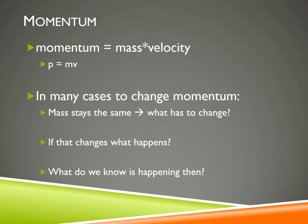The way we calculate momentum is mass times velocity: p = mv. To change momentum, we usually change velocity rather than mass. But if we're changing velocity over a certain amount of time, that is a change in velocity over time — which is an acceleration.